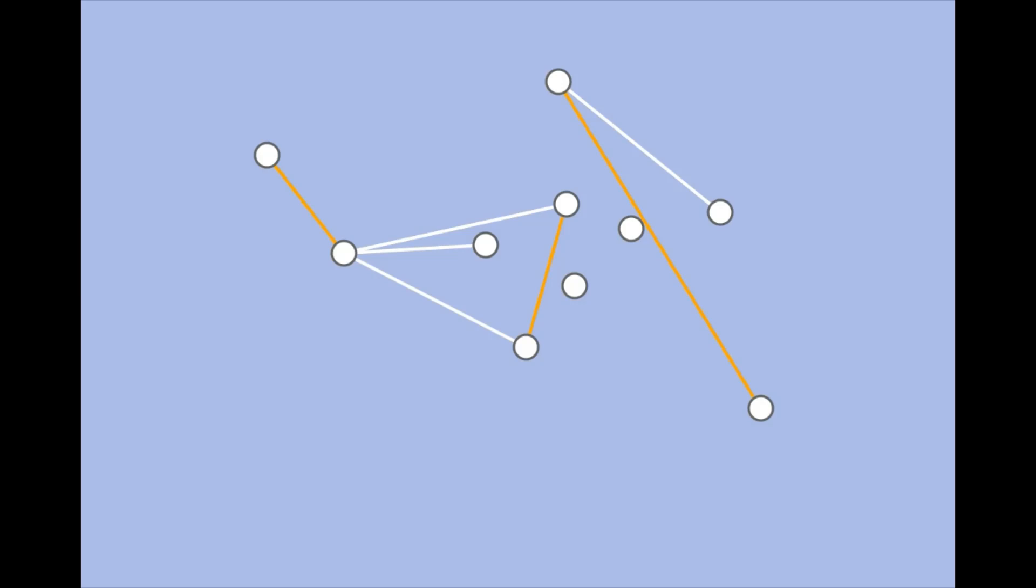The key insight is that sometimes removing an edge from the matching allows you to add many more in return. For example, take this graph of four vertices and three edges. This matching, of size one, cannot be improved by adding any edges.